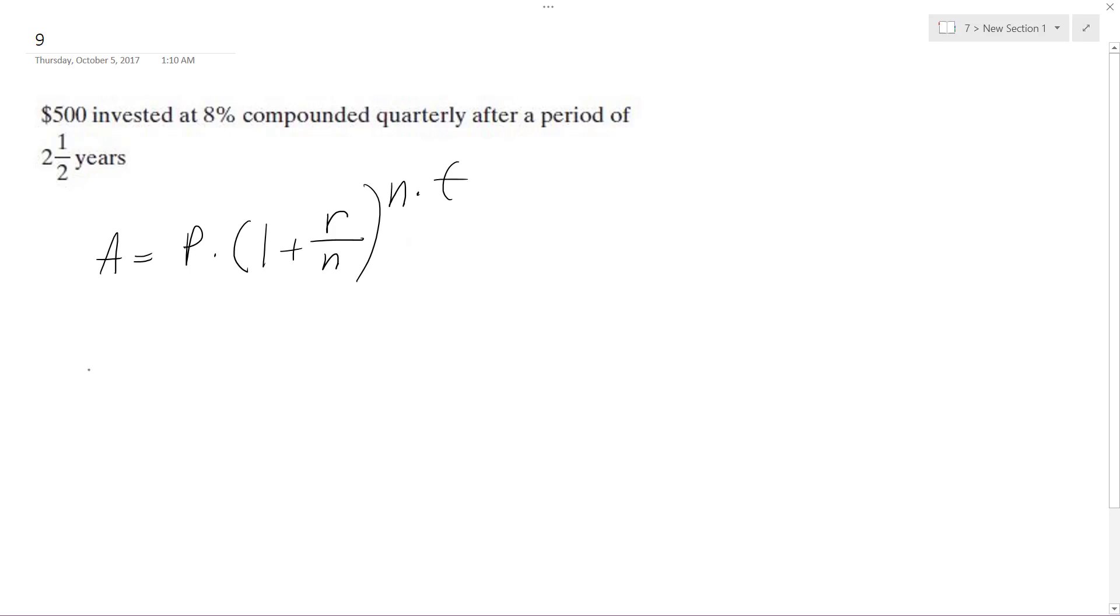Okay, so total accumulated equals principal, which is 500 times 1 plus 0.08 divided by quarterly, which is 4, raised to the 4 times 2.5 years, which is equal to 5 over 2.